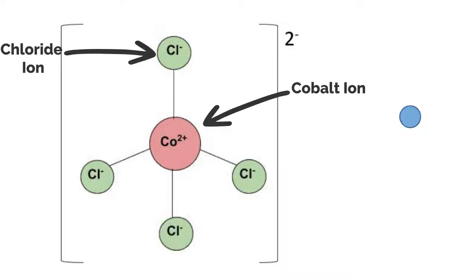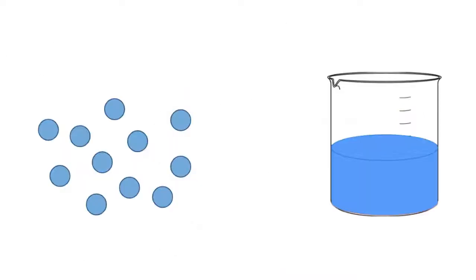When cobalt ions are surrounded by chloride, the particle appears blue. If there are many ions present, the color we see is blue.